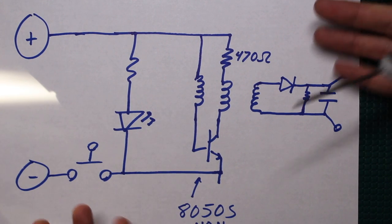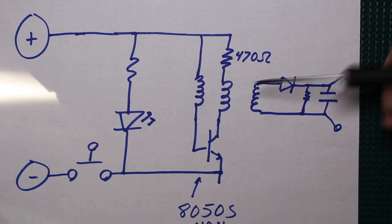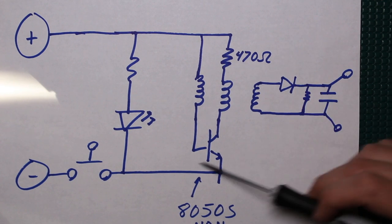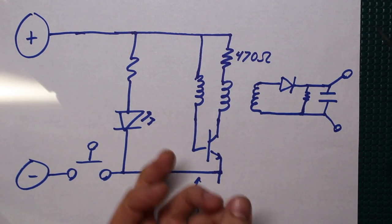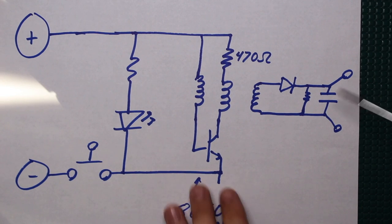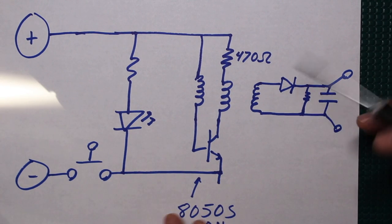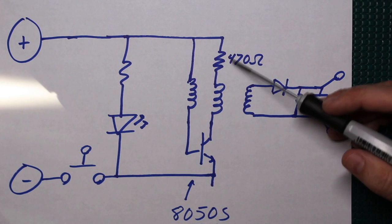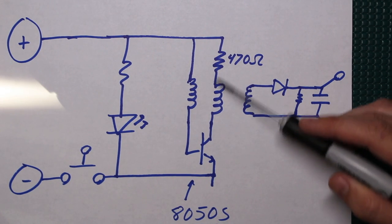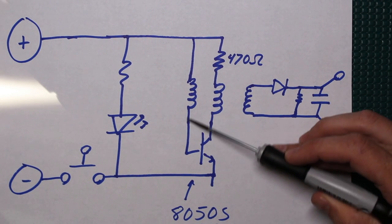So when you look at this at first it may be a little confusing, but I've seen this arrangement before and maybe you have as well. This is a joule thief type oscillator. It's a little unique and not exactly what I'm used to.